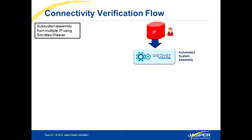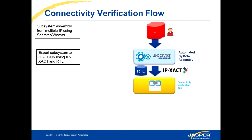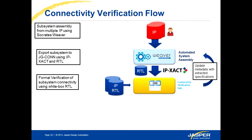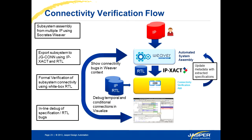The second flow we're looking at today is a connectivity verification flow. We'll be using the Socrates Weaver application to assemble a subsystem from multiple IP. We will then export the subsystem to the Jasper Gold connectivity app, using IP-XACT to export the information and also exporting the RTL for the connected system. The Jasper Gold connectivity app will perform a formal verification of the subsystem connectivity using white box RTL, and we'll perform inline debug of the specification versus the RTL. We extract the results as metadata and update the specification in Socrates with the results of the formal verification. Once again, we have a full closed loop flow.